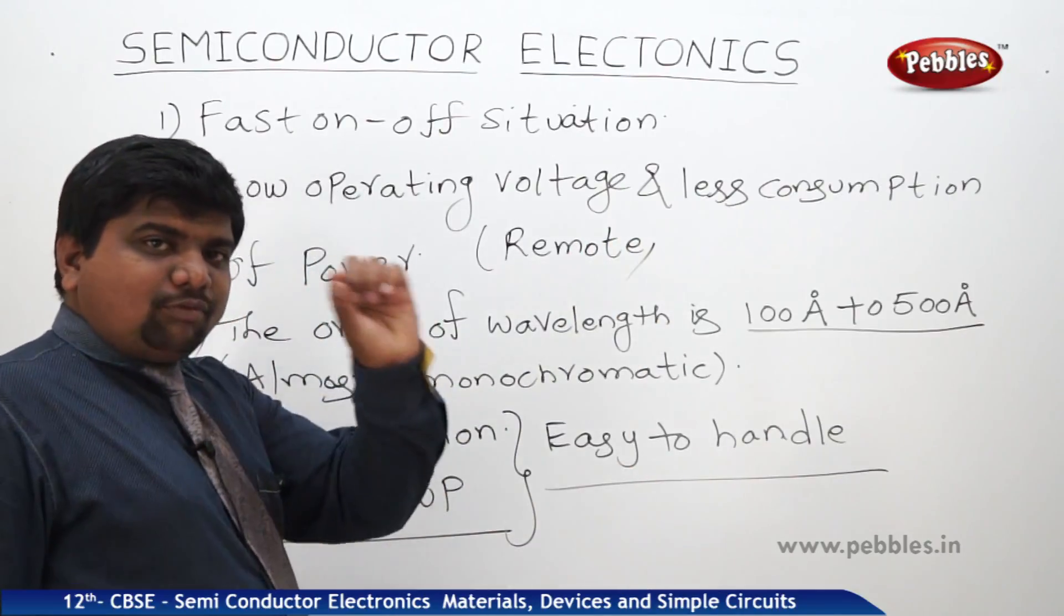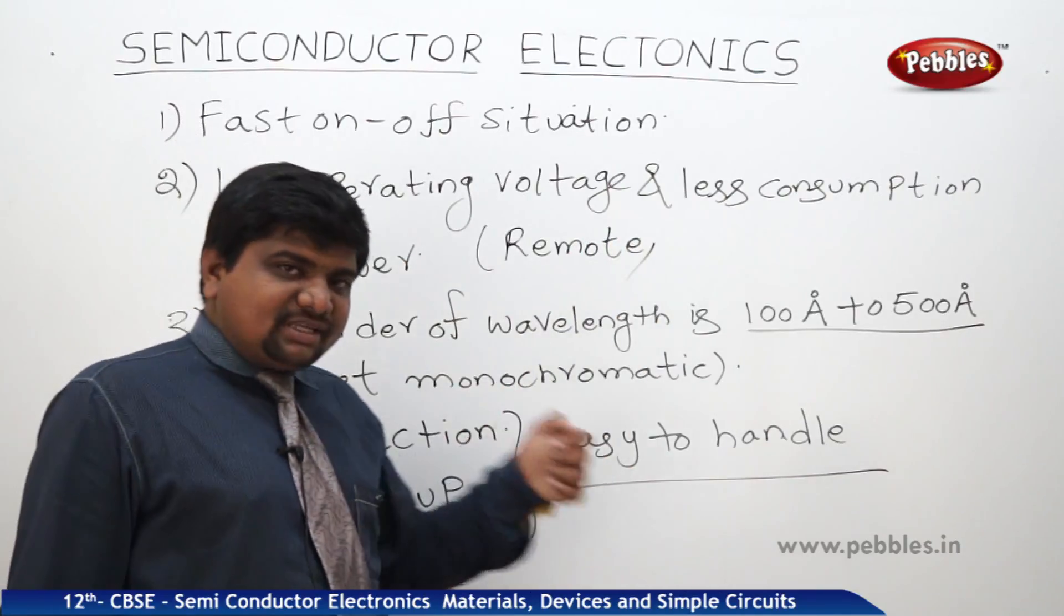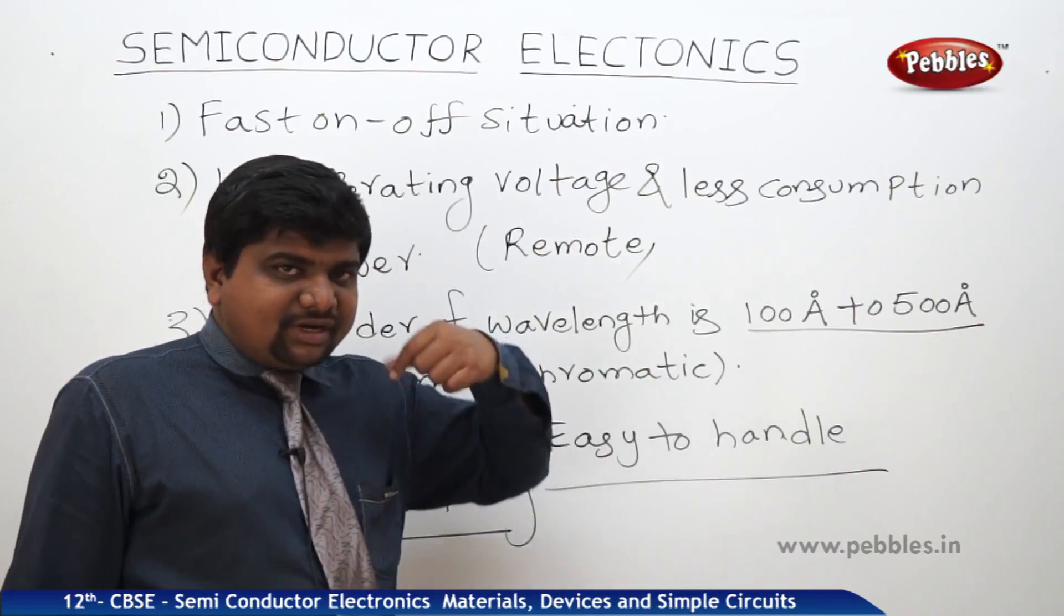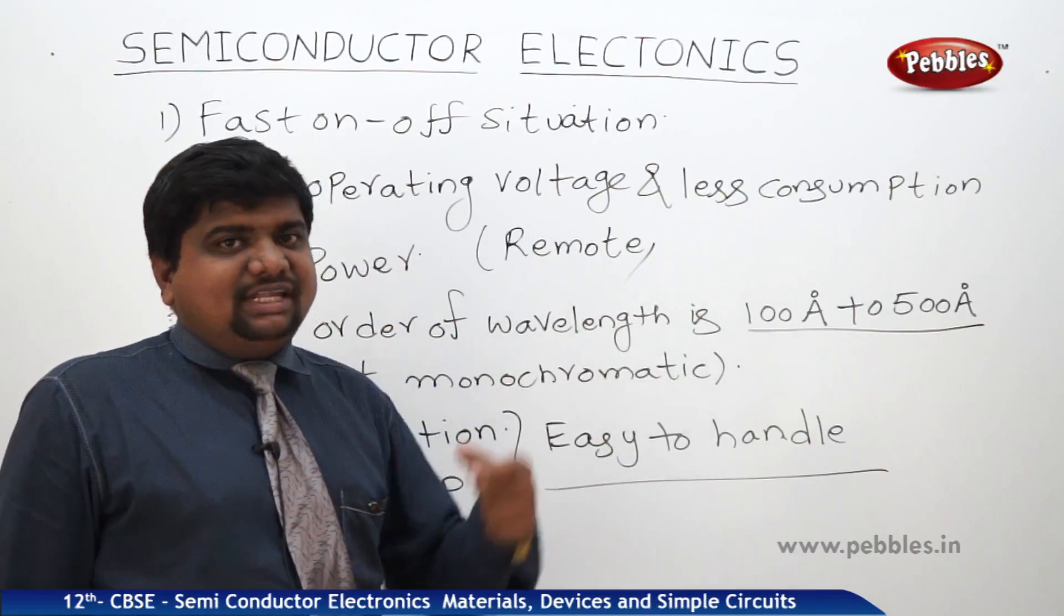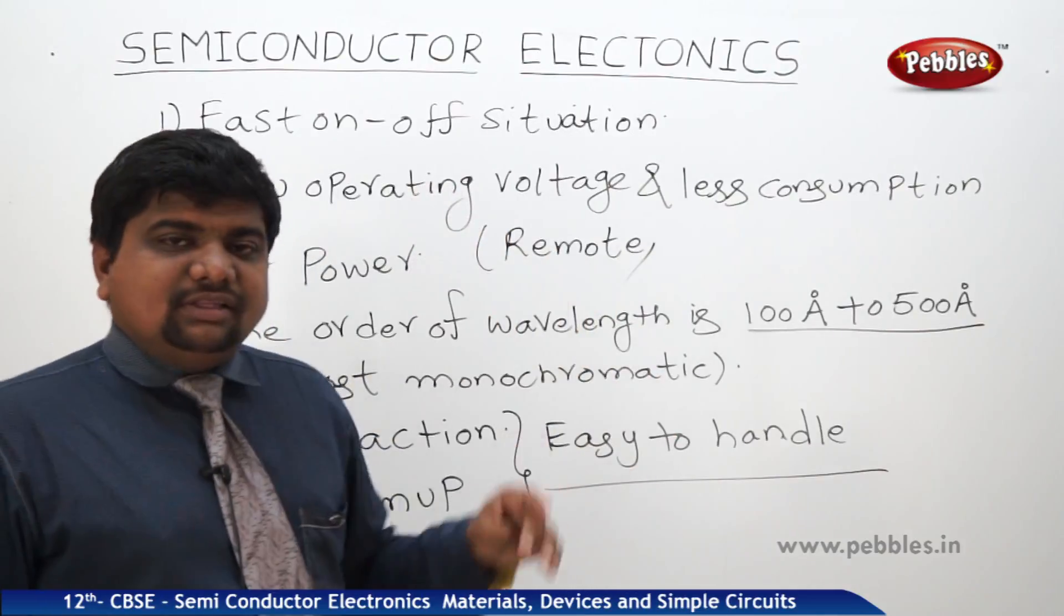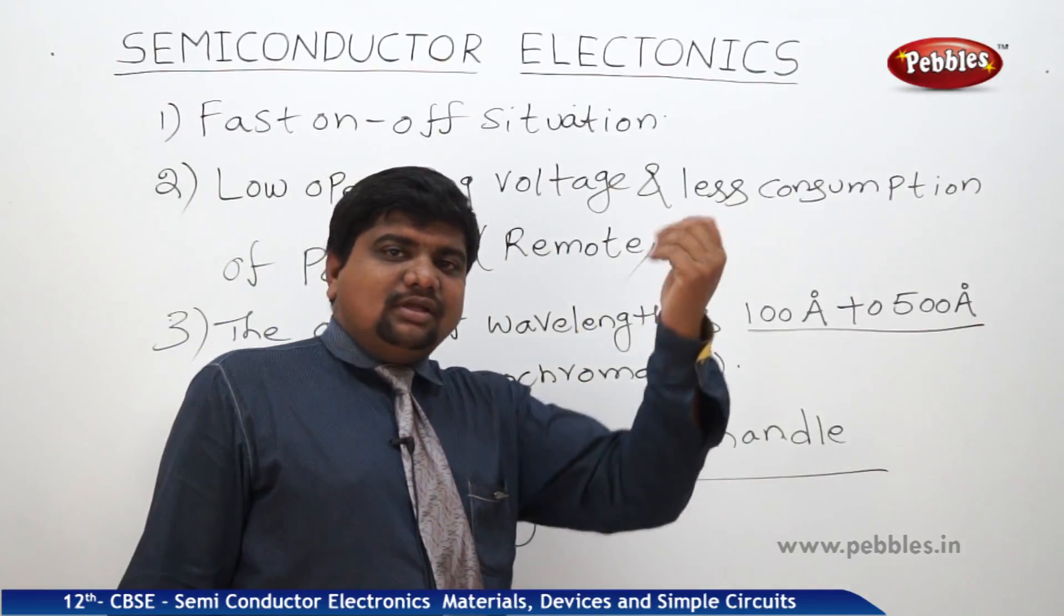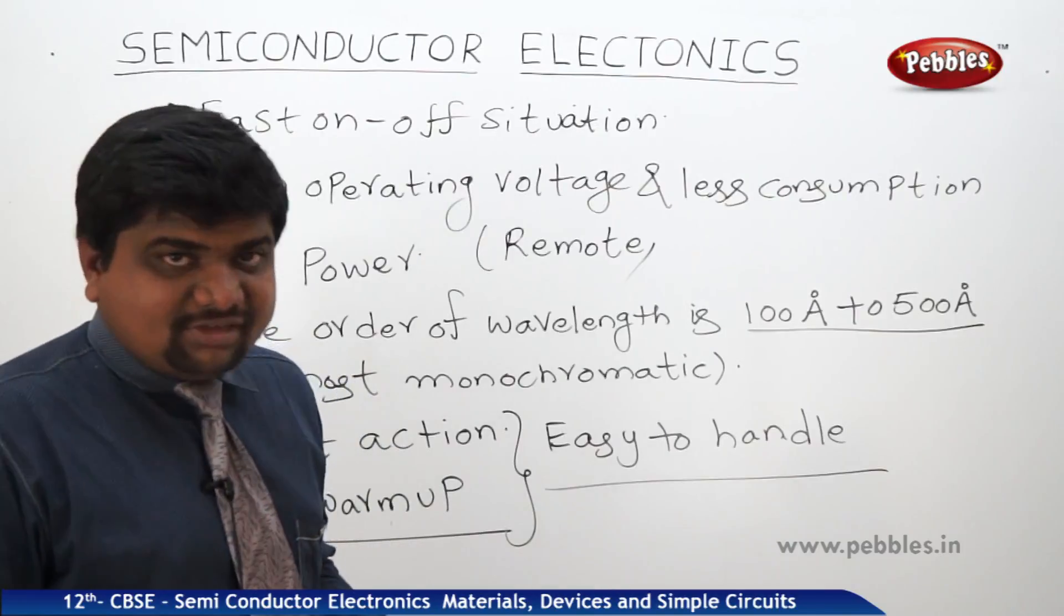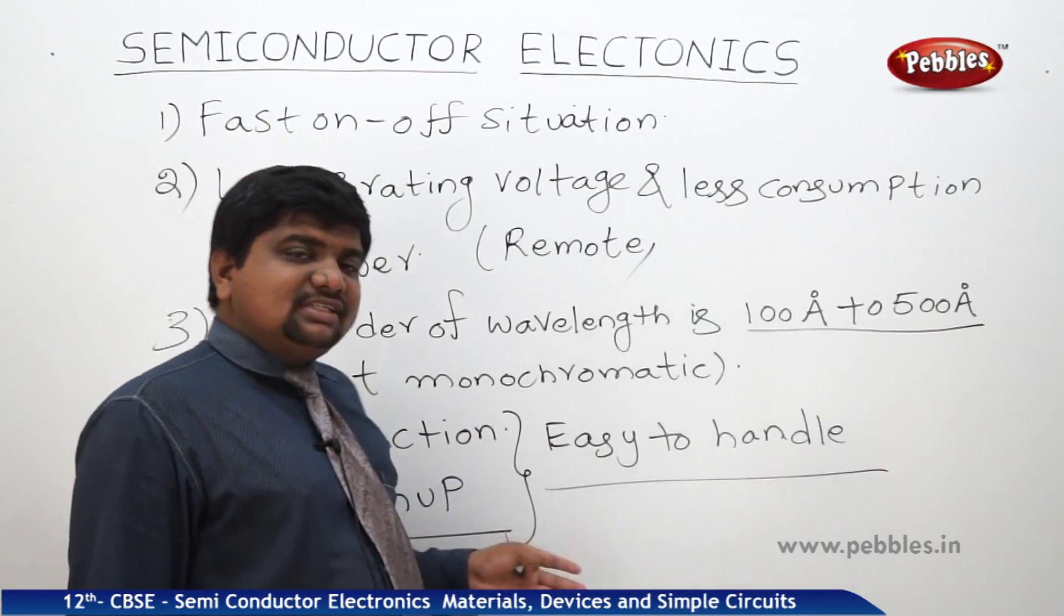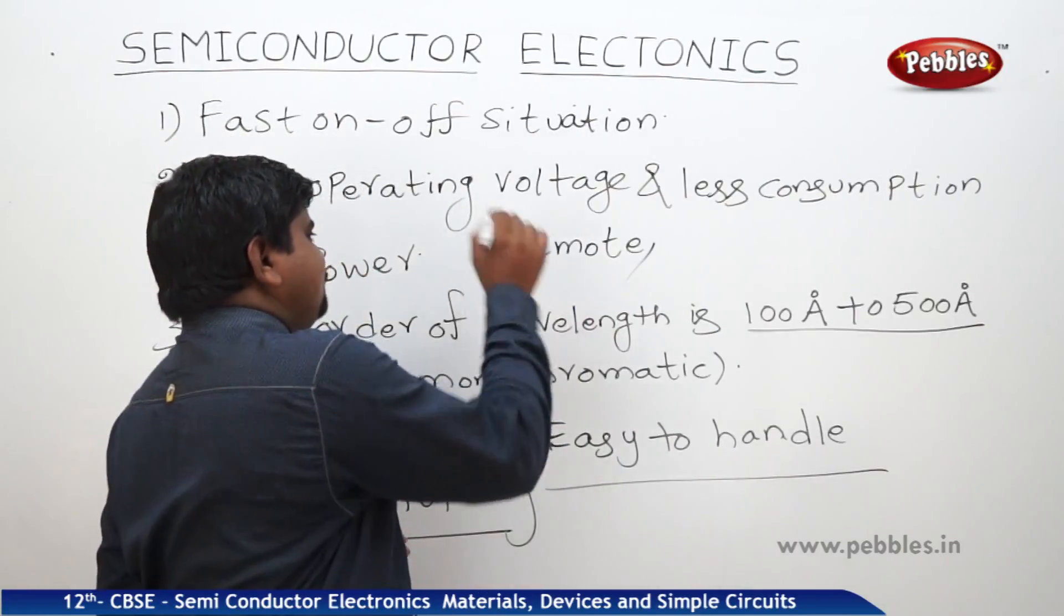TV remote has one bulb. When you are pressing the button, through the bulb that infrared radiation touches the TV screen or the TV knob. Then correspondingly, there is a change in the volume, sound, picture quality and the channel frequency also.